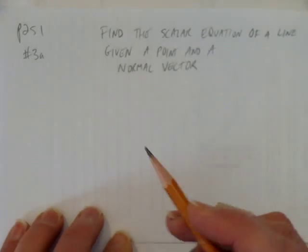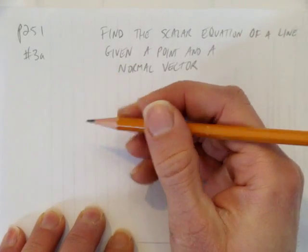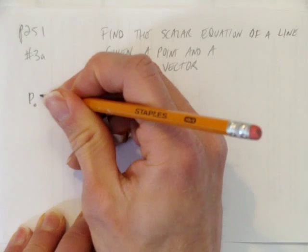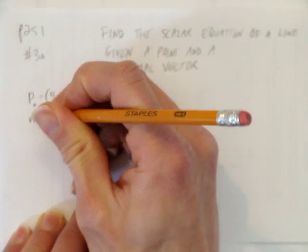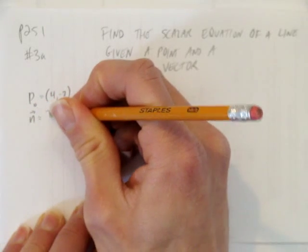And we'll do 251 number 3a. So it gives us a point (4, -2), and a normal vector of (2, 7).